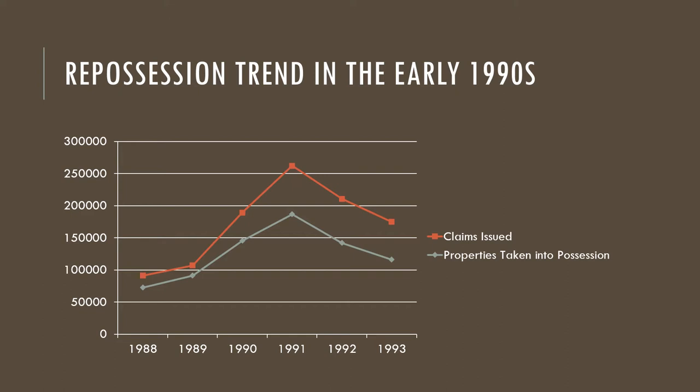What I discovered immediately upon seeking further information about the possession process was that there wasn't any information out there. The reason for that is that what we might call run-of-the-mill possession cases — just straightforward cases of mortgagors being in arrears — are heard in the lower courts, held in private, and are seldom reported. So it's what Loveland describes as invisible law. In order to find out more, I had to conduct empirical legal research.